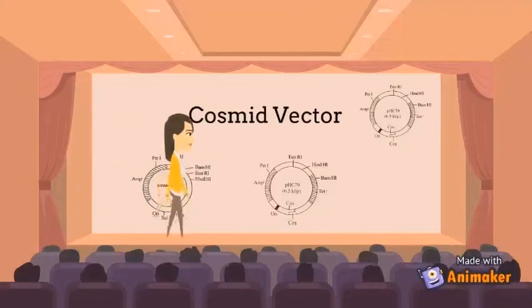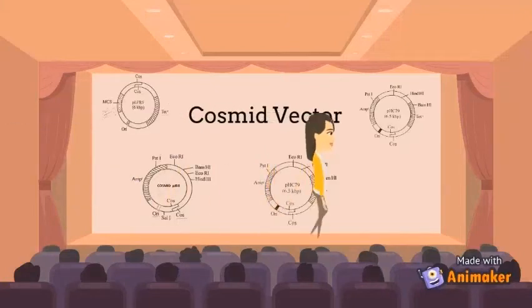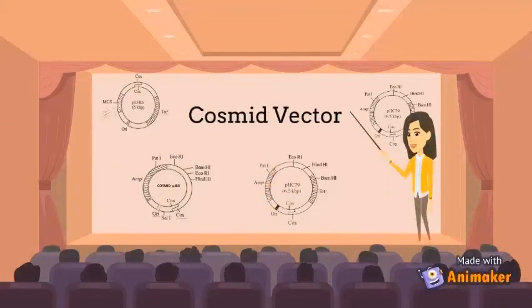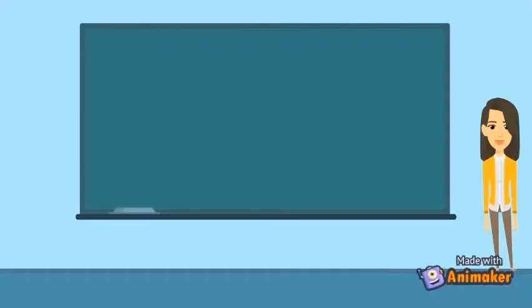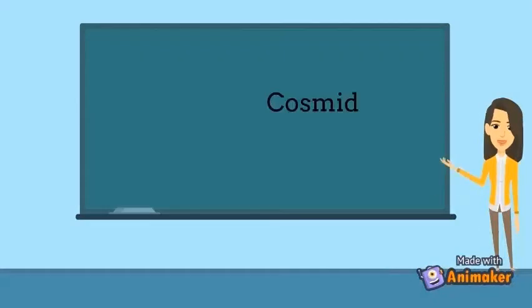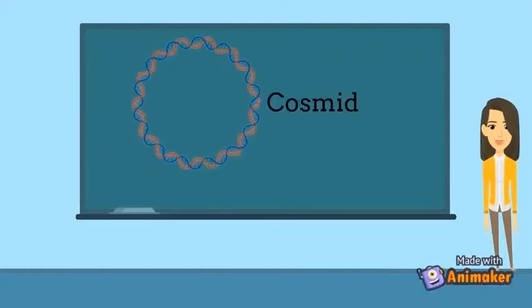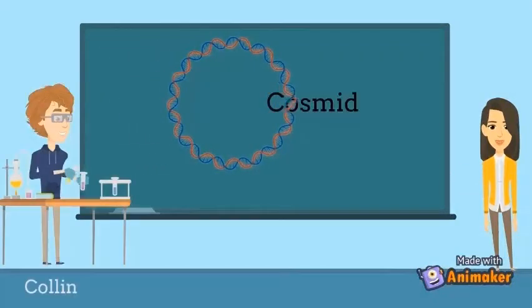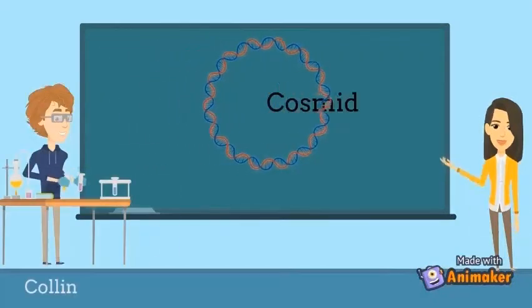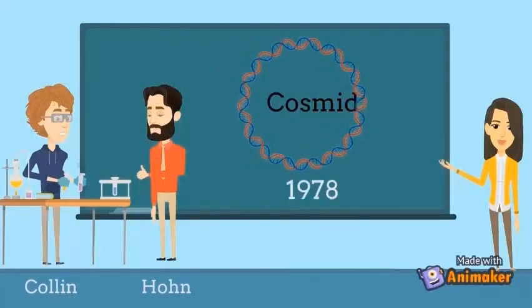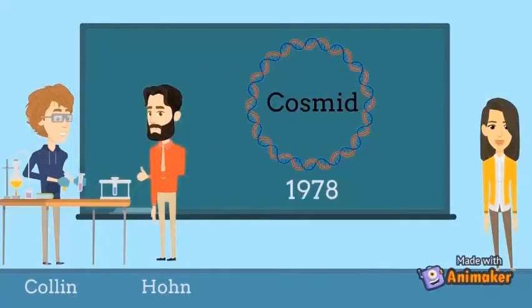Hello everyone, today we are going to introduce Cosmid vectors. A cosmid is a circular double-stranded DNA vector first described by Collins and Hahn in 1978.